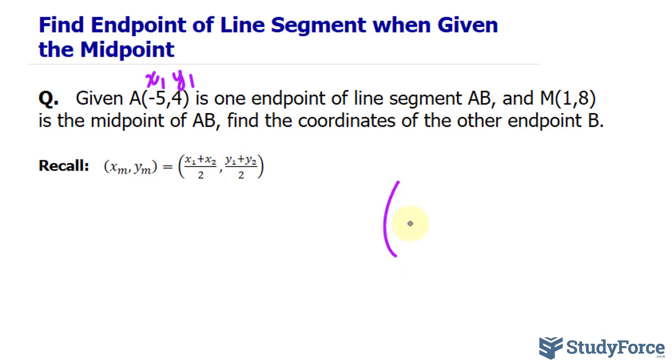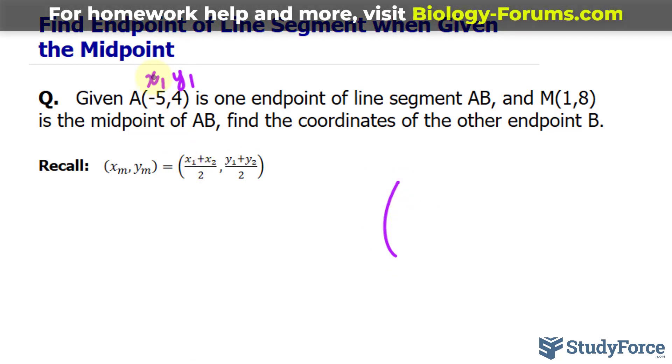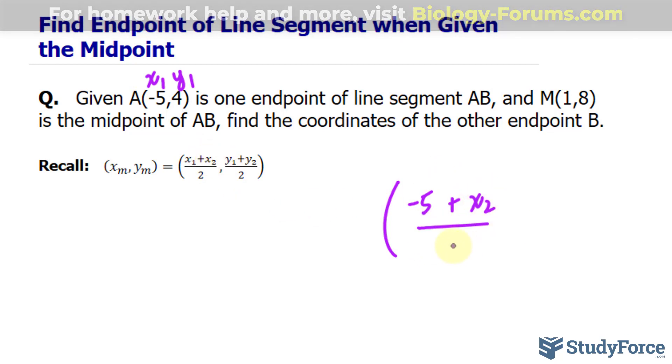Let me rewrite it over here. I have x sub 1, which is negative 5, plus, I don't know what x sub 2 is, I'll just leave it the way it is, divided by 2. And for this part, I have y sub 1, it's 4, but I don't have y sub 2, divided by 2.